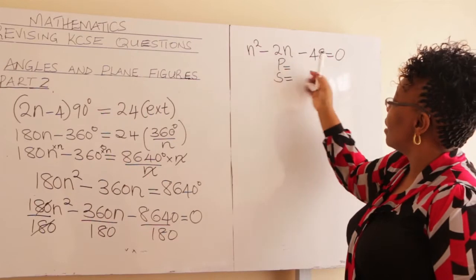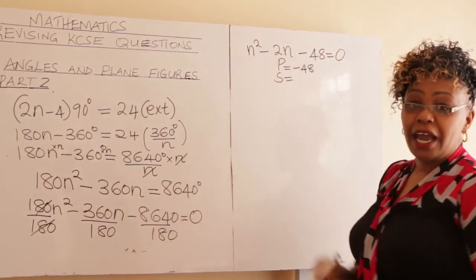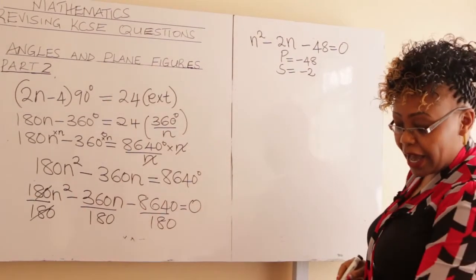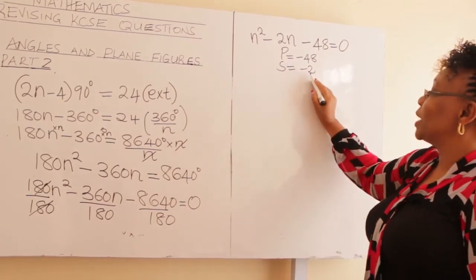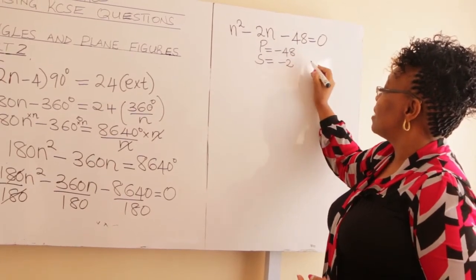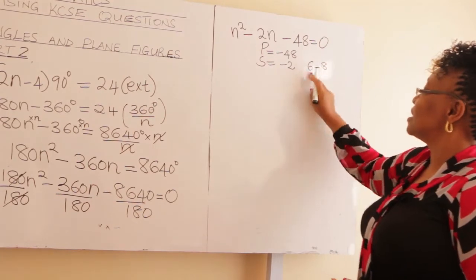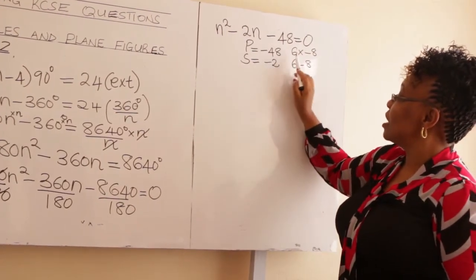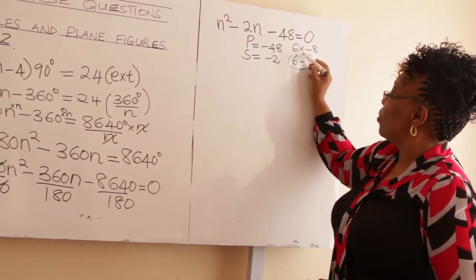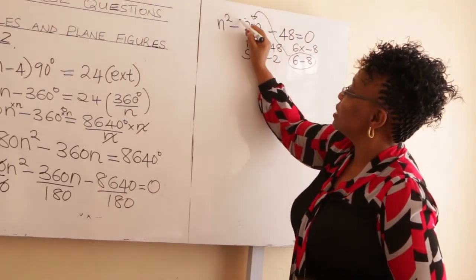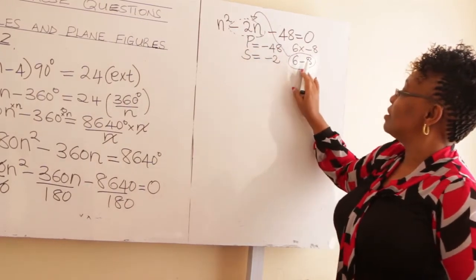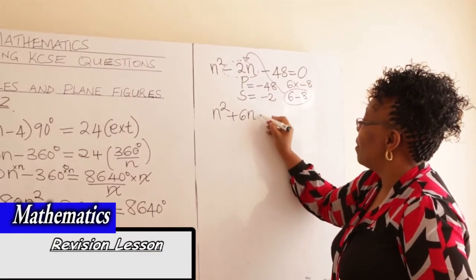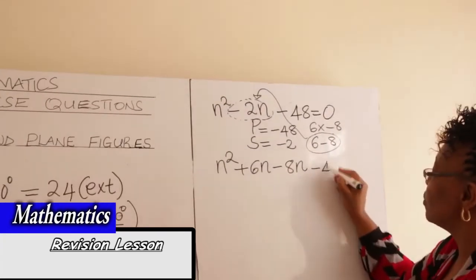Find two numbers with product −48 and sum −2: those numbers are 6 and −8. Substitute into the middle term: n² + 6n − 8n − 48 = 0. Factor the first two terms: n(n + 6), and the last two: −8(n + 6). So (n + 6)(n − 8) = 0.